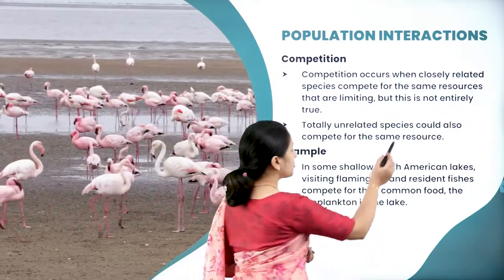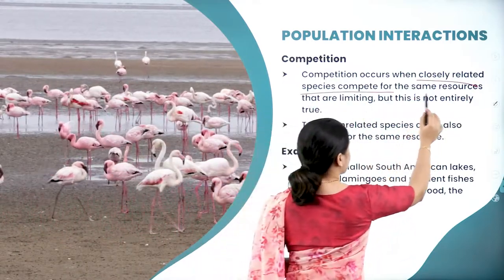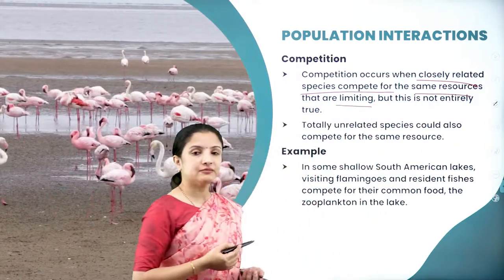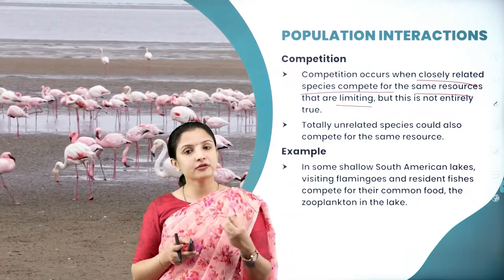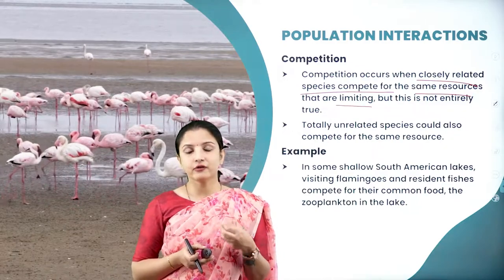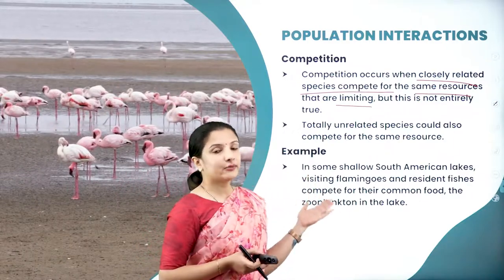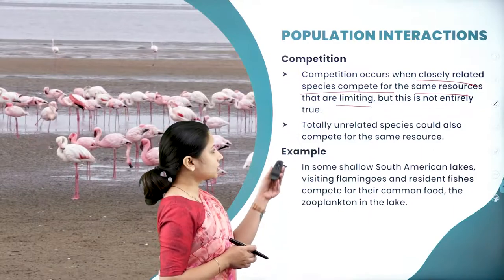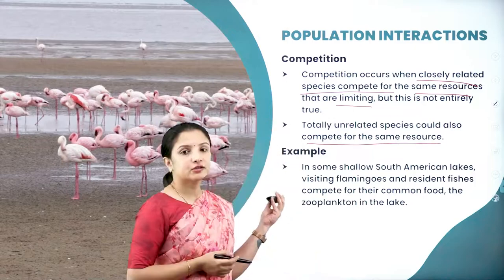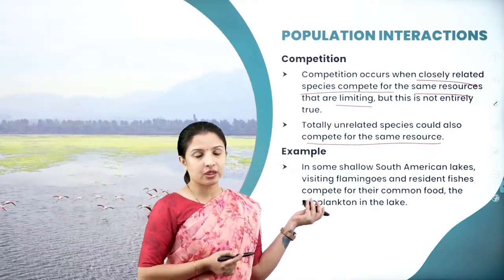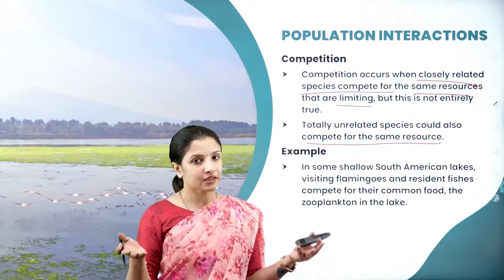Competition occurs when two closely related species compete for the same resource that is limiting. But sometimes competition is not completely true to this definition. Some organisms, in order to survive, have changed their strategy for competition — they might have changed their foraging or eating habits. Totally unrelated species could also compete for the same resource; it may occur between two completely different species.